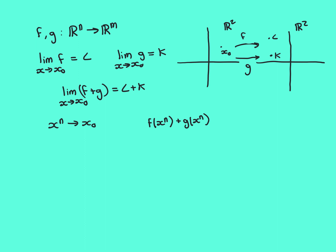This is a sequence of vectors obtained by adding two separate sequences: f(xn) and g(xn). We know something about those sequences. Because the limit as x approaches x0 of f equals l, the image sequence f(xn) converges to l. Similarly, because the limit of g equals k, the image sequence g(xn) converges to k. We've taken two convergent vector sequences, added them together, and we can apply the algebra of limits for sequences of vectors to conclude that the sum converges and converges to l plus k.